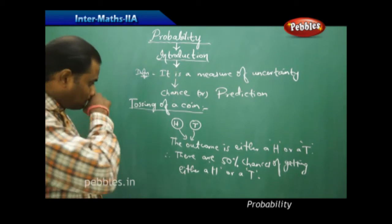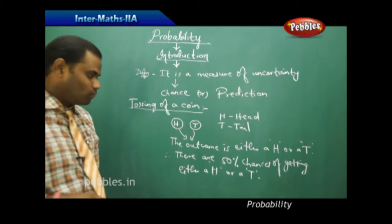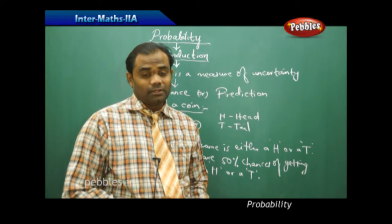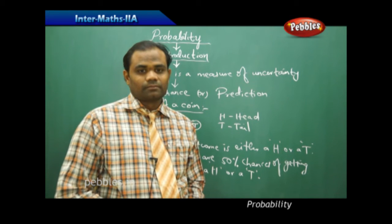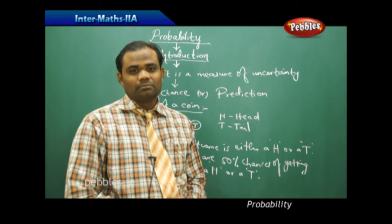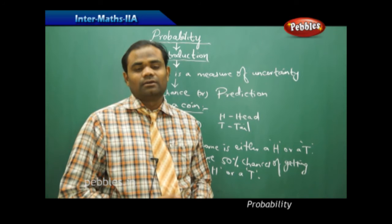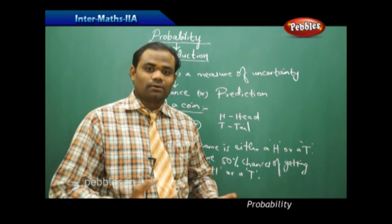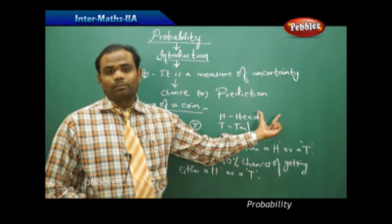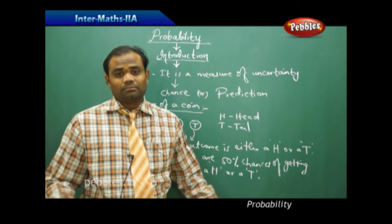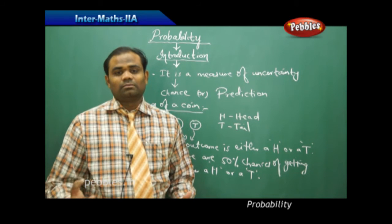H stands for head and T stands for tail, and we may get either with 50-50 equal chances. Tossing of a coin is the deciding factor for international matches because it doesn't cheat in favor of any one party — getting a head or a tail has equal chances. That is how probability gets connected with chance or prediction; nobody knows the outcome, as it is only based on mathematical calculations and predictions through which we estimate the outcome by chance.